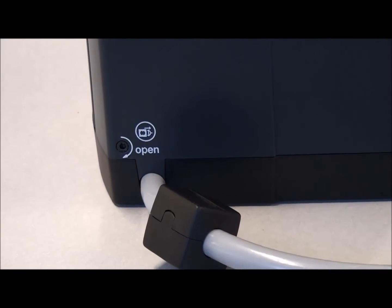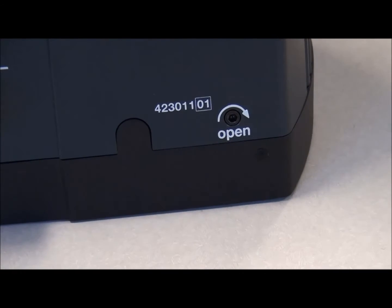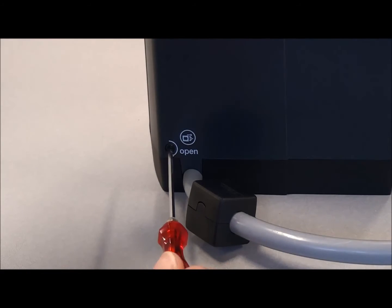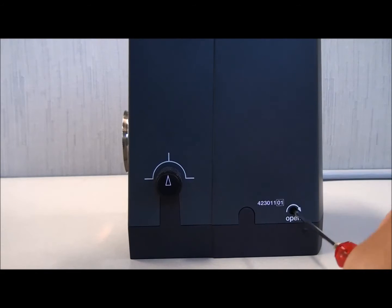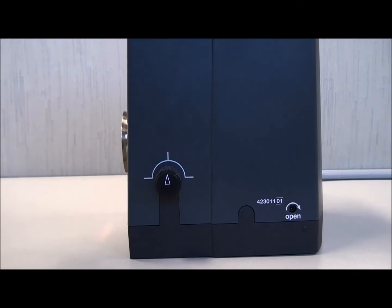There is a 3mm screw on each side of the lamp housing which must be turned in the direction indicated for open. Turn these screws fully until they stop. The cover can then be lifted straight up.